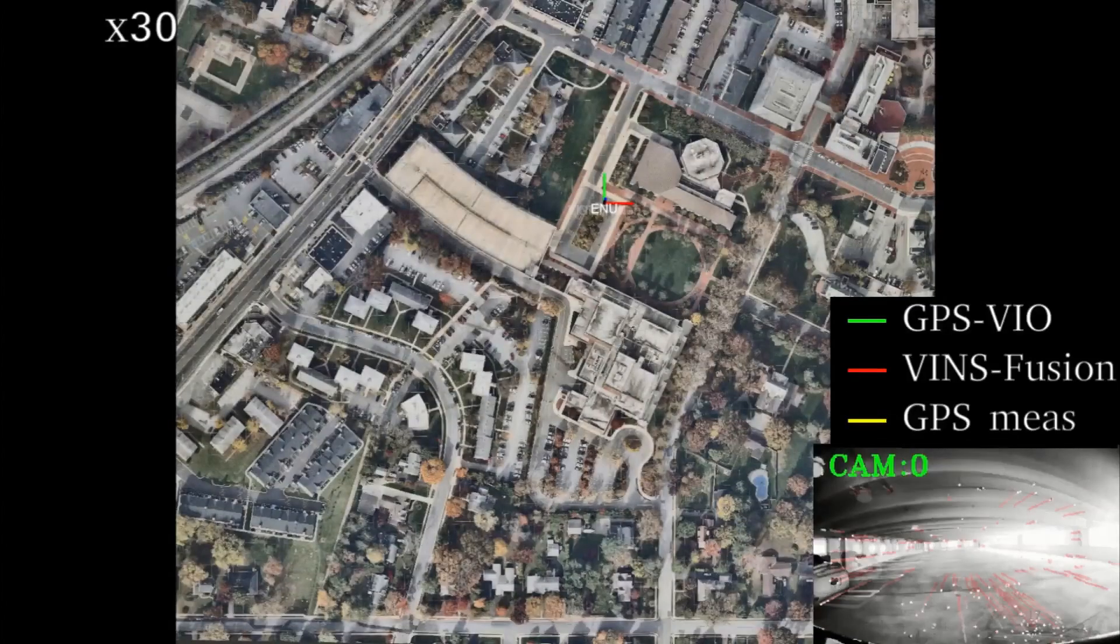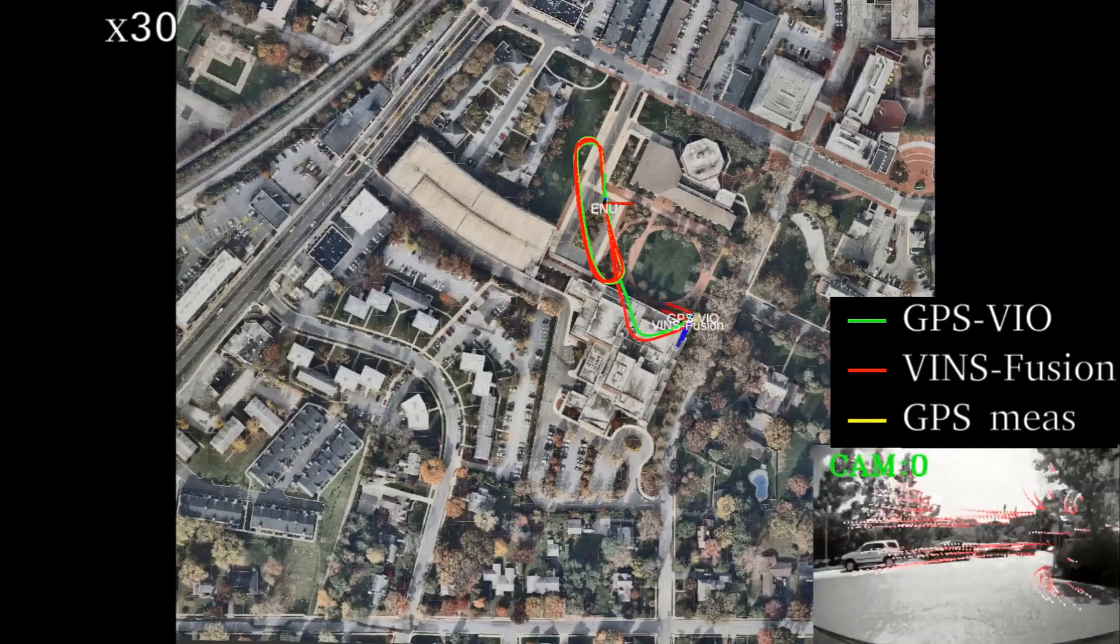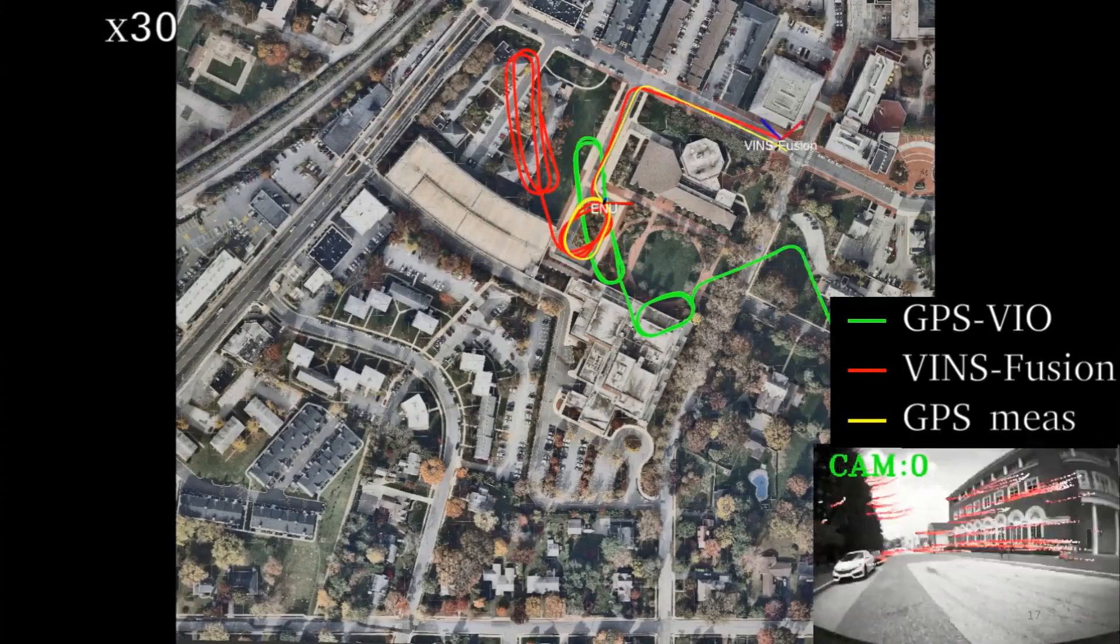Finally, we evaluated the proposed system in real-world data. In this experiment, we started from inside the garage and moved out. You can see the circles of the green line moved into the building, which indicates successful initialization.